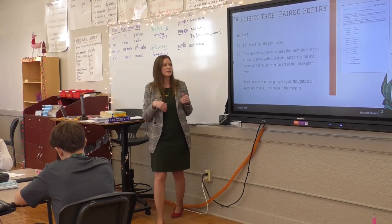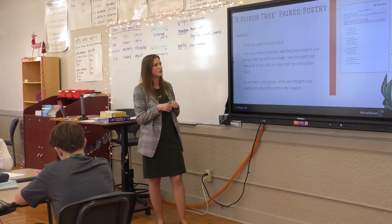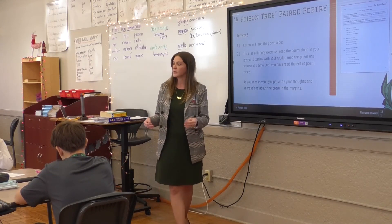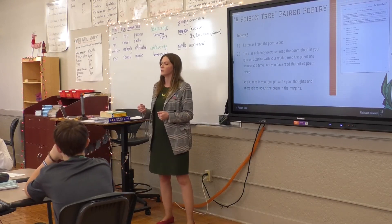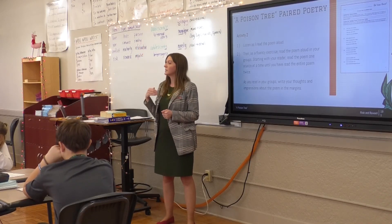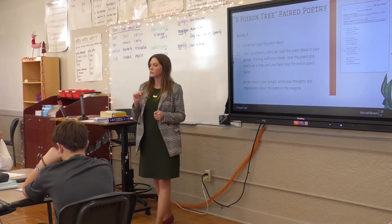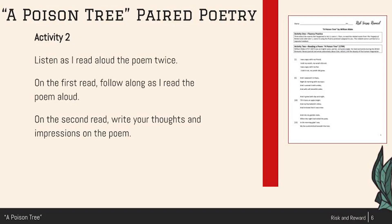On the board, I've got some instructions for us. First, you're going to listen as I read that poem aloud to you. And then, in your groups, as a fluency exercise, you will read that out loud to each other. So, where are my readers in my groups? Once we get to the fluency part, you will start your groups out. As you read with your groups, write your thoughts — what do you think is happening in this poem? For our first read-through, follow along on your paper as I read it to you.